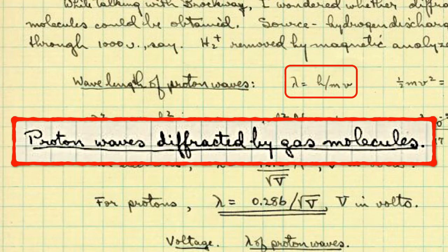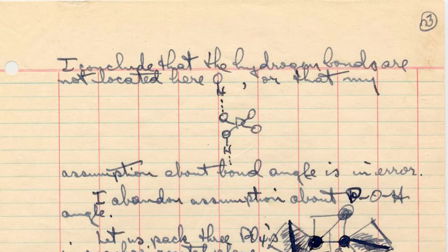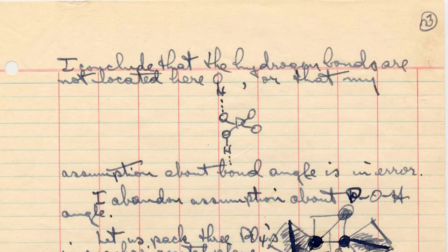Here's another page, and this one is actually pretty important for us today. He writes: 'I conclude that the hydrogen bonds are not located here, or my assumption about the bond angle is an error.' So he either concludes the bonds aren't located there, or his assumption about the bond angle is no good. Therefore he says: 'I abandoned my assumption about the POH angle — the phosphorus-oxygen-hydrogen angle.' Then: 'Let us pack the PO4s — the phosphate ions — into that shape.'